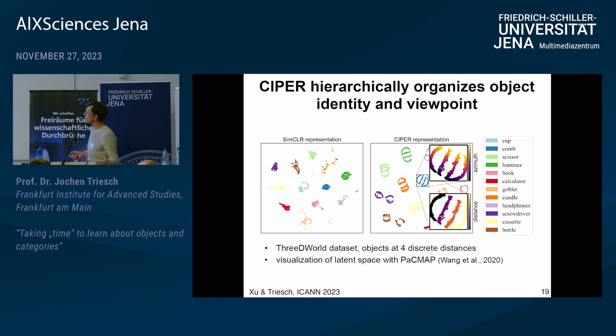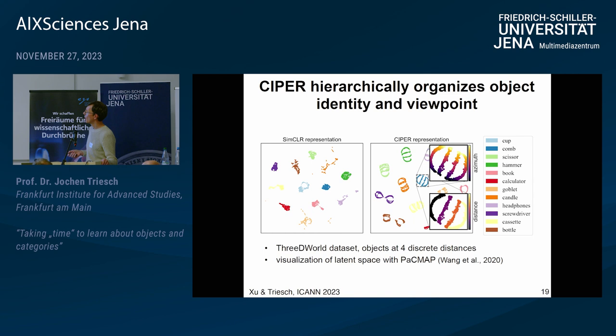This works really well. One thing I found very striking is that the representation being learned, projected in two dimensions with the SpecMAP method, gives an organized representation of objects that on the one hand has the identity represented by different colors, but then has a substructure emerging that actually tells you the particular viewpoint with which you're seeing the object. You have this with CIPER, but you don't have this in the standard time-augmented representation learning case.